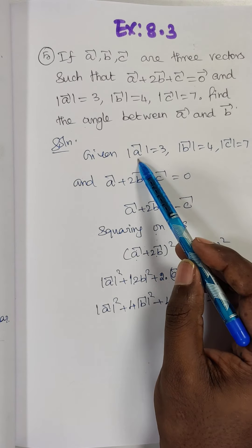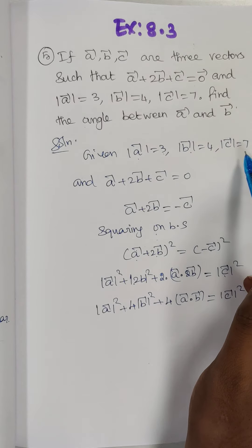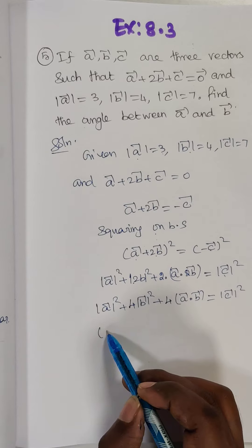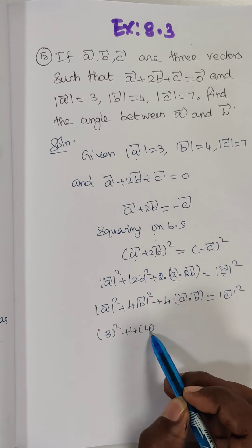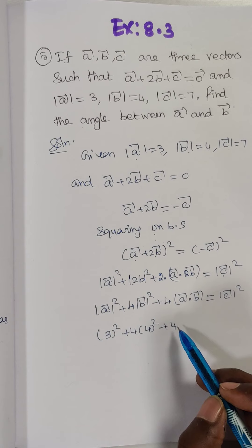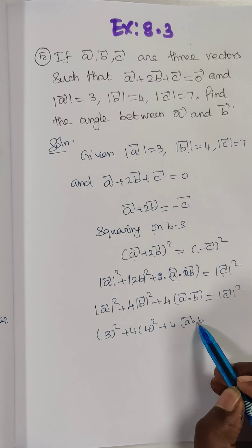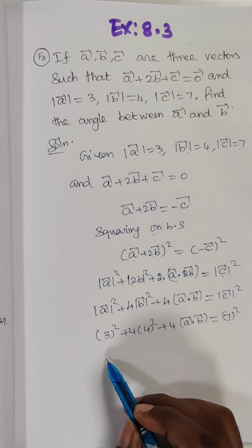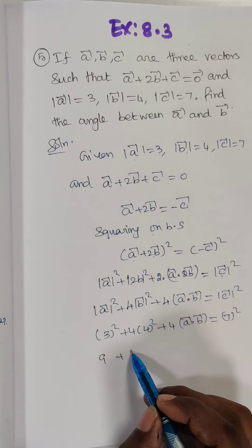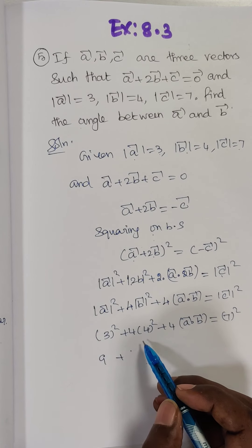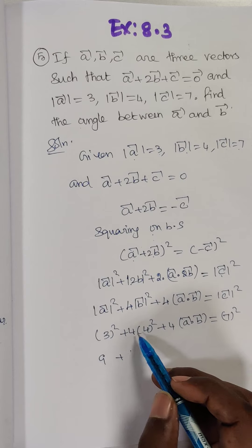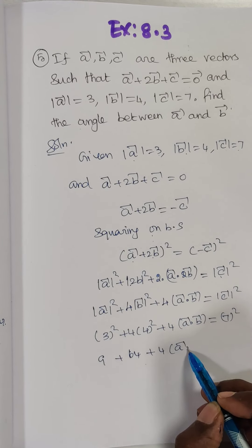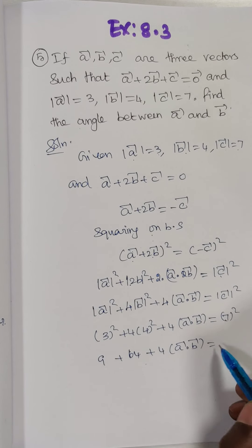Already given: modulus of A vector is 3, modulus of B vector is 4, modulus of C vector is 7. Now I am going to substitute here. So 3 squared plus 4 into 4 squared plus 4 into A dot B — we don't know — is equal to modulus of C vector 7 squared. So 3 squared is 9, plus 4 into 4 squared: 4 cubed is 64. So 9 plus 64 plus 4 into A dot B is equal to 7 squared, which is 49.